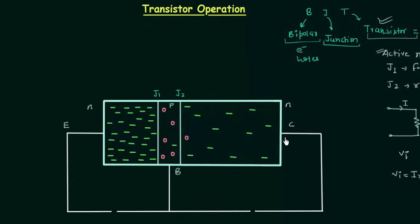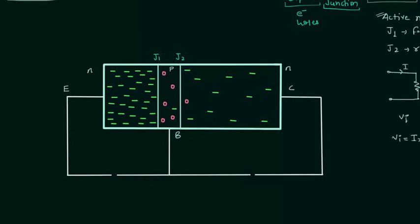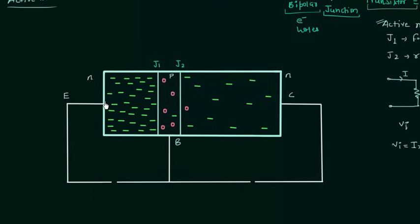We want to operate this transistor in active mode. In active mode junction J1 is forward biased, so to forward bias J1 we apply a forward bias potential — N is connected to the negative terminal and P to the positive terminal. Let's say this forward bias potential is VEB. We also have to reverse bias junction J2, so N is connected to the positive terminal and P to the negative terminal; the collector is connected to the positive terminal. Let's say this reverse biasing potential is VCB.